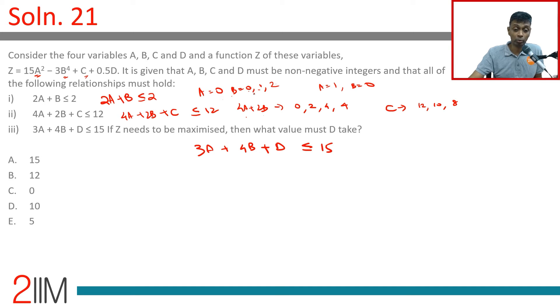If you put A as 0, B as 0, then 4A + 2B is 0, C is 12. So A = 0, B = 0, C = 12. This is one possibility. 3A + 4B + D ≤ 15, so D = 15. That is one possibility.